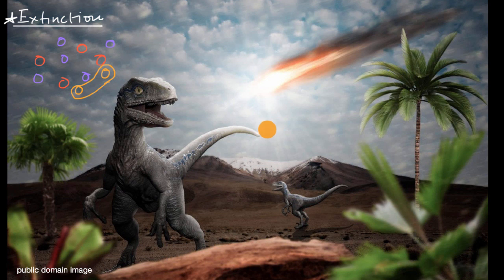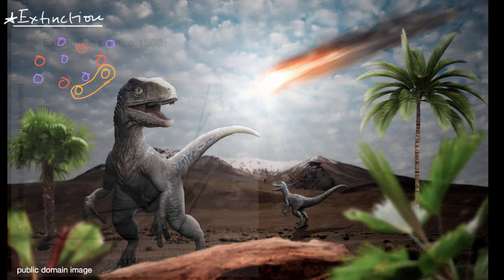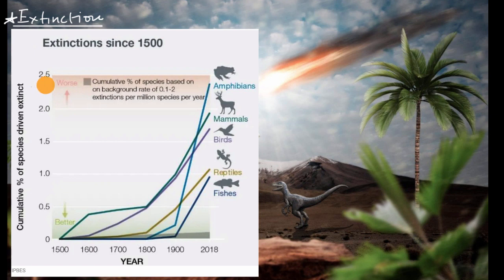Clearly in a situation where the sky is burning, as in the dinosaur example, very few organisms are going to be able to adapt to those types of circumstances. But you can also have fast change that might not seem so fast to us as human beings. For example, this chart right over here shows extinctions since 1500. I encourage you to pause this video and make sure you're processing what is going on here, because that's a skill in and of itself, but it's really interesting.